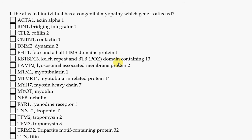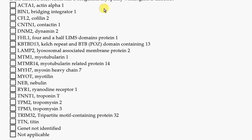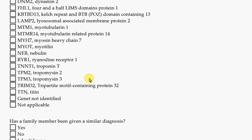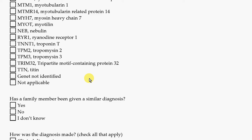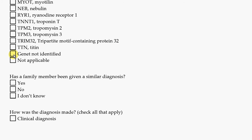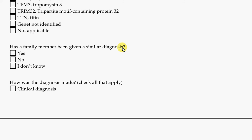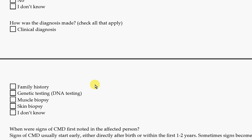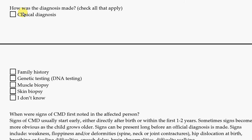If the affected person has a Congenital Myopathy, you want to select which gene it is if you know. If the gene has not been found out yet, no problem — just check here. Also, has a family member been given a similar diagnosis? Here we want to know how the doctor made the diagnosis. A clinical diagnosis means the doctor did a physical exam and, looking at the history of the person, determined they have a certain muscle condition.